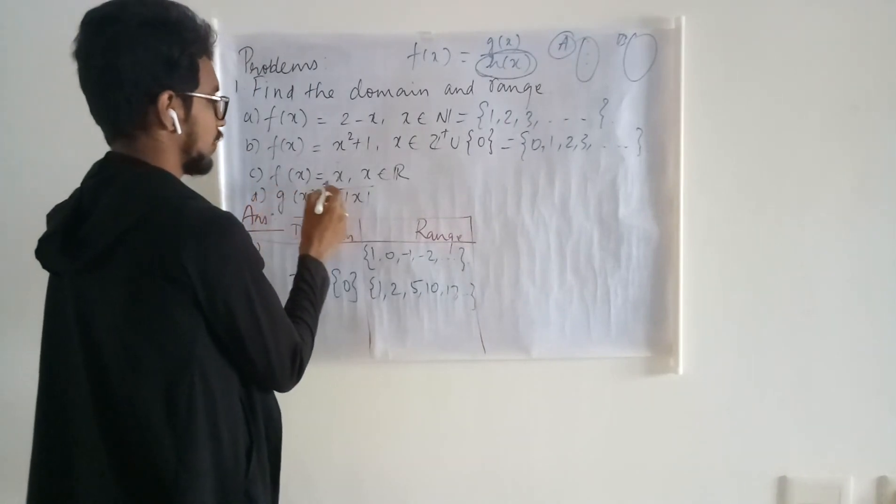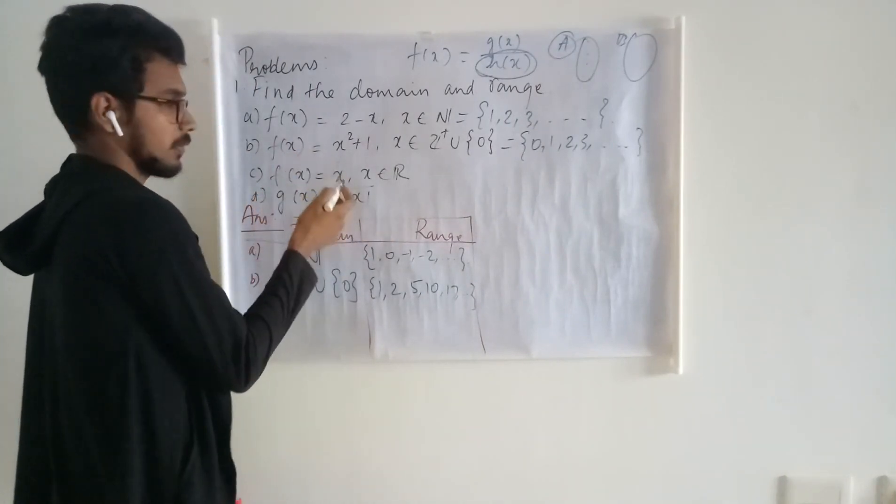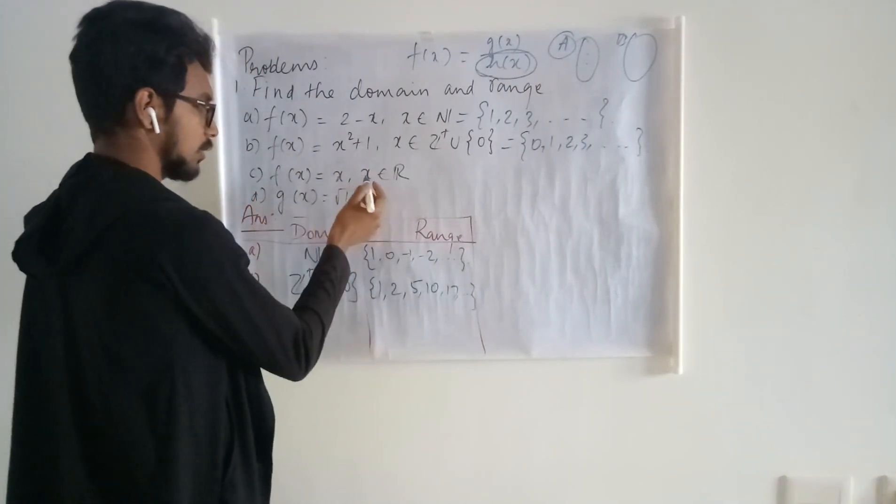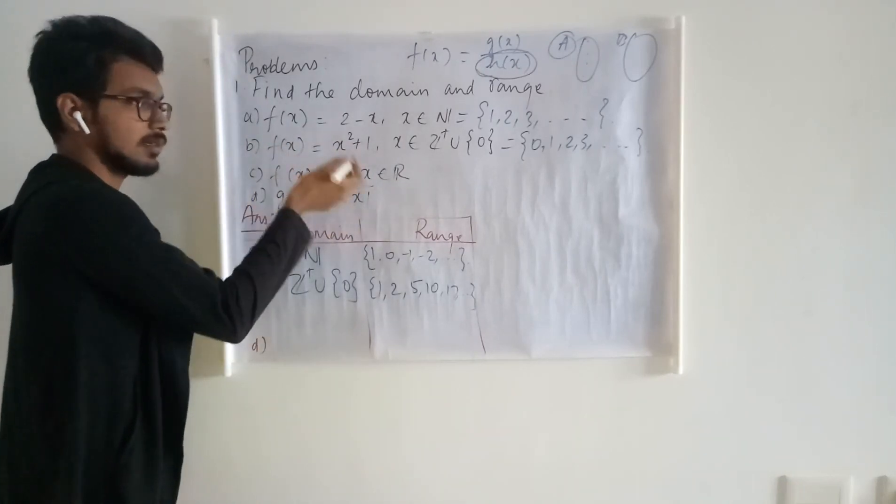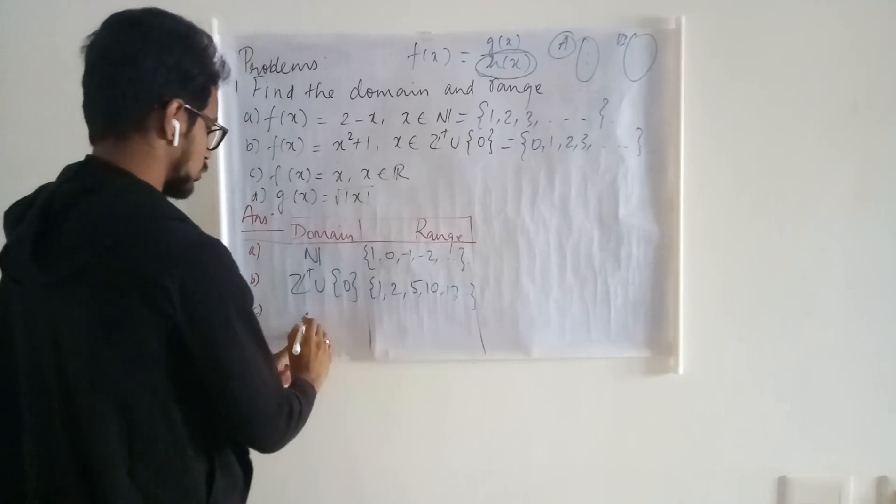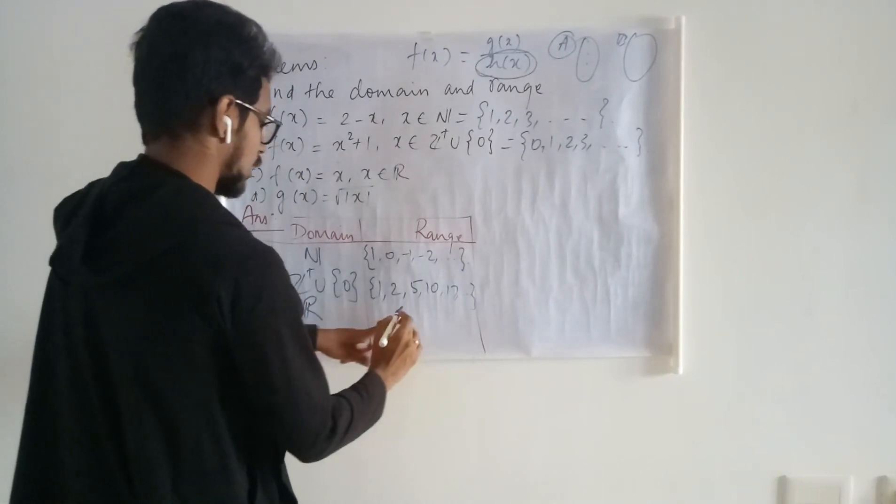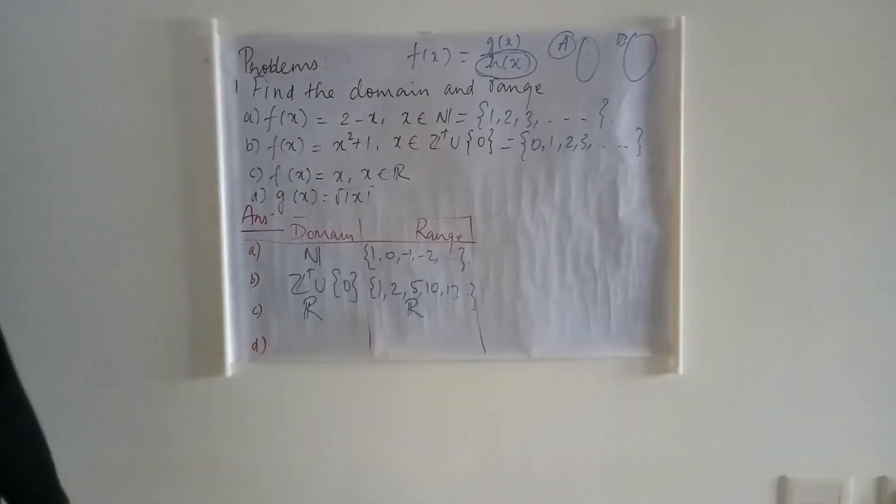Here, the function is given to be f(x) = x. This is an identity mapping, meaning it can take any value. Whatever value you give for the set, the same is going to be your image. So the domain is entire R and the range is also entire R.